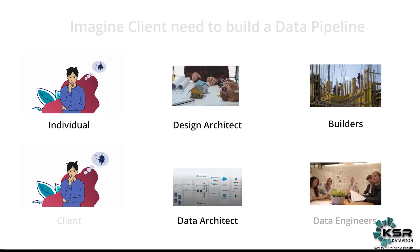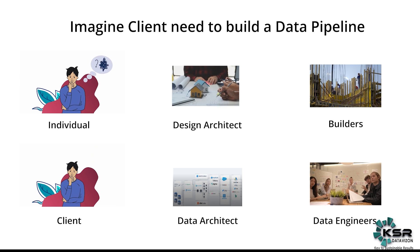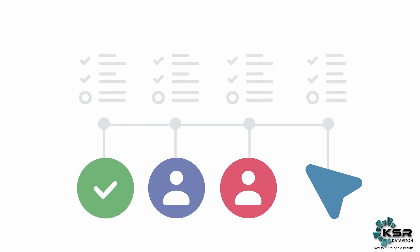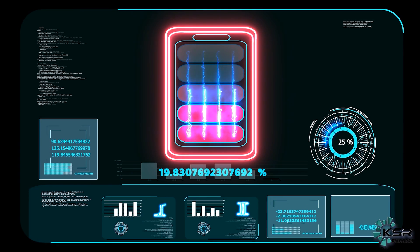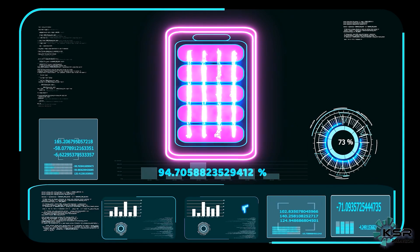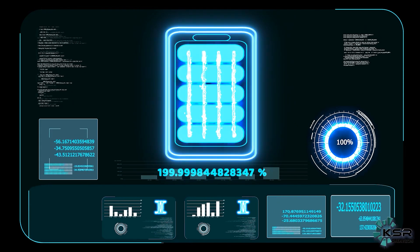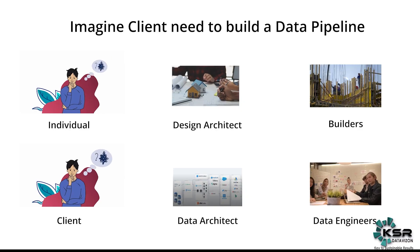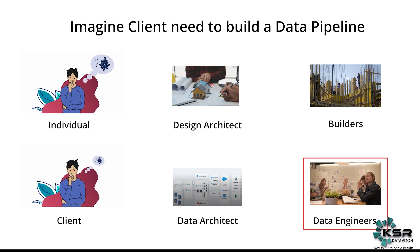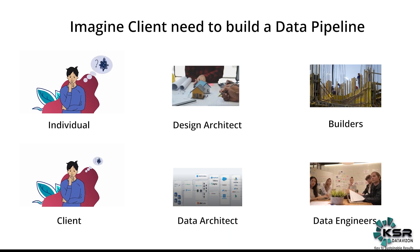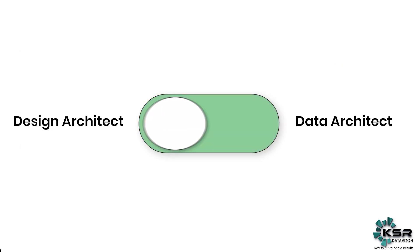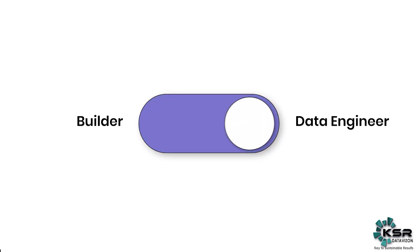Now bringing this same example to our roles: the individual person is replaced by the client, who is asking for a data pipeline. The person who designs the house plan is the data architect in our terminology. The data architect helps in building the plan — where exactly data should move from, which orchestration layer to use, and how to scale if data grows hugely in future. And just like the builders who build the house, data engineers are the actual builders who build the pipeline. So: individual equals client, design architect equals data architect, builder equals data engineer.